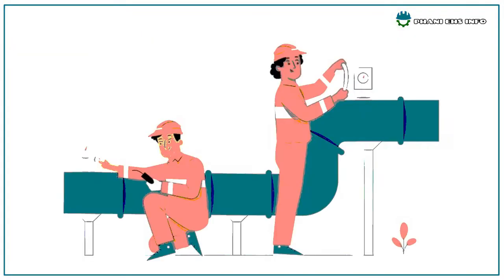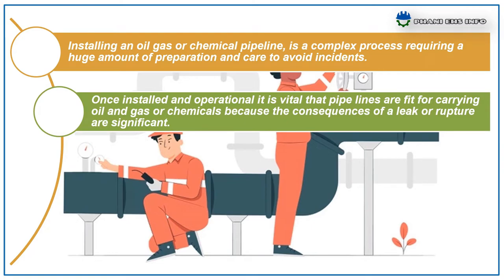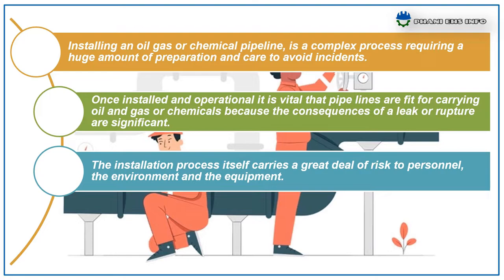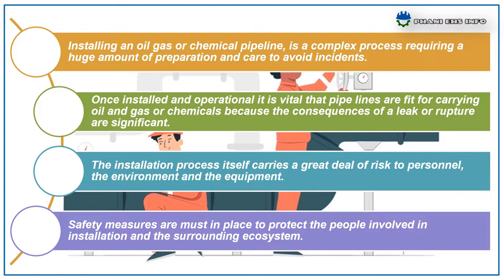Let me start with the introduction. Installing an oil and gas or chemical pipeline is a complex process requiring a huge amount of preparation and care to avoid incidents. Once installed and operational, it is vital that pipelines are fit for carrying oil and gas or chemicals, because the consequences of leaks and ruptures are very significant. The installation process itself carries a great deal of risks to personnel, the environment, and the equipment. Hence, safety measures must be in place to protect the people involved in the installation and the surrounding ecosystem.